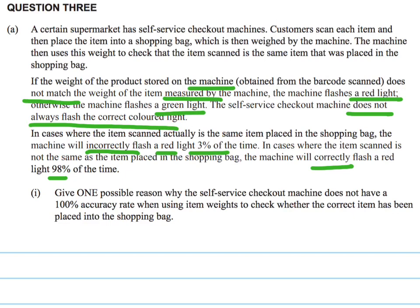This first question doesn't require us to use those percentages — we'll need them for the next question. What it does ask is for some ideas around how this works. We are asked to give one reason why that machine does not have a 100% accuracy rate.